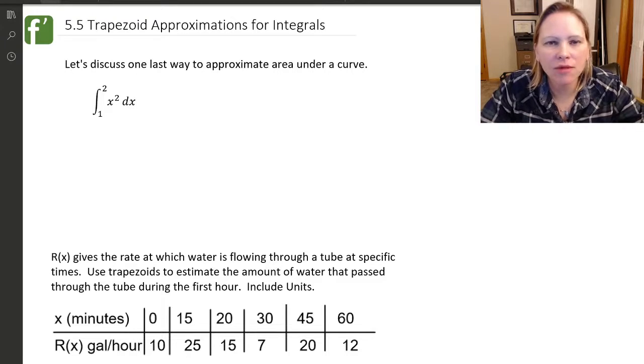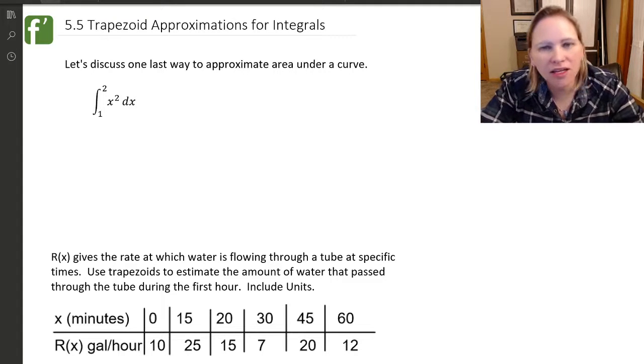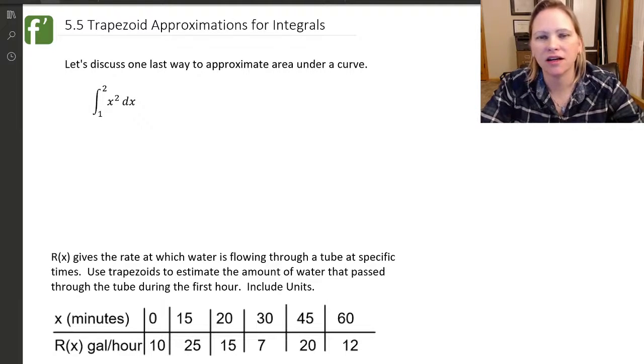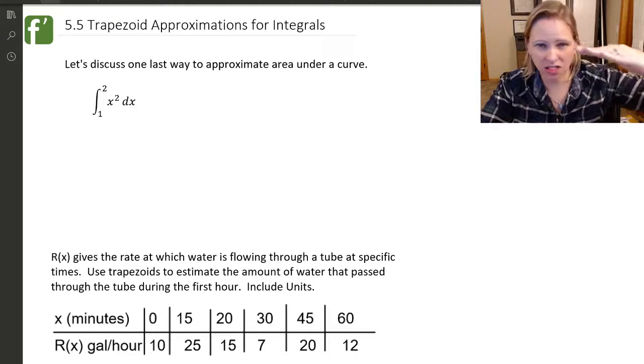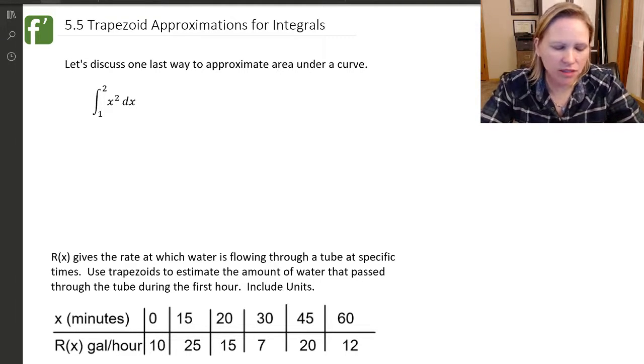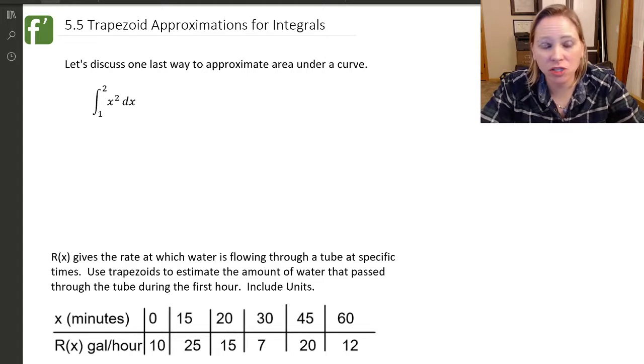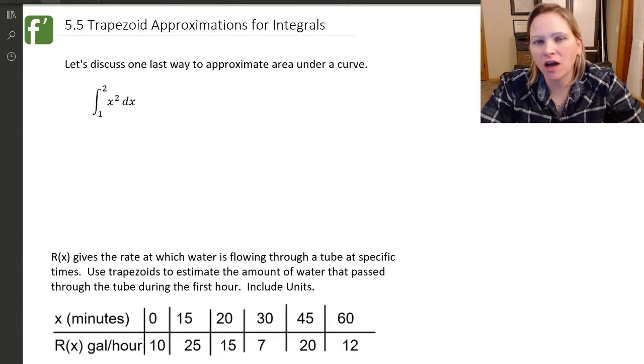So far we started out this unit talking about rectangular approximation methods, otherwise called Riemann sums. We talked about LRAM, RRAM, MRAM, which are left, right, and midpoint ways to evaluate rectangles. And we discovered that those approximations can usually either over or underestimate the actual value.